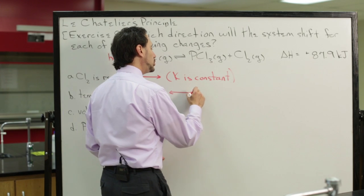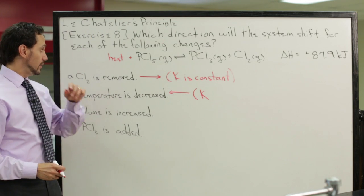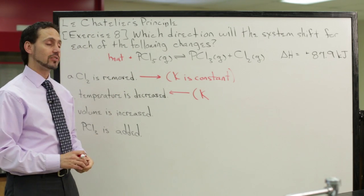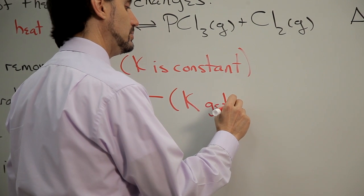In this case, the value for the equilibrium constant will change. Since we're decreasing the products and increasing the reactants, the equilibrium constant should get smaller.